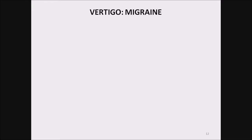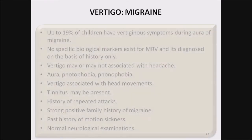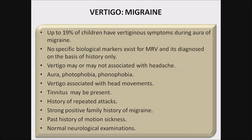Now migraine — again one of the most common conditions in children as well as in adults. Up to 19% of children have vertiginous symptoms during or around a migraine. No specific biological marker exists for migraine-related vertigo; it is diagnosed only on the basis of history. Vertigo may or may not be associated with headache. Aura, photophobia, and phonophobia are present. Vertigo is usually associated with head movements. Tinnitus may be present due to inner ear vessel spasm. There is a history of repeated attacks, strong positive family history of migraine, past history of motion sickness in some patients, and normal neurological examination.